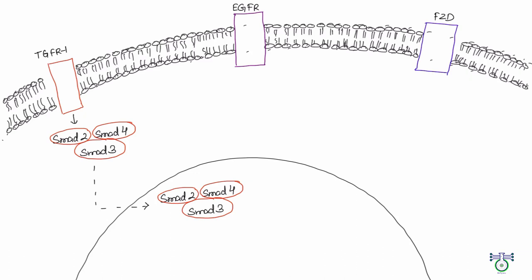TGF-beta can also trigger a process called EMT (epithelial-mesenchymal transition) in liver cells. This is when cells change from one type to another, and it's important for things like development, but sometimes it can also help cancers to spread in the body. When HCV infects the cell, it messes with the normal way genes control this.